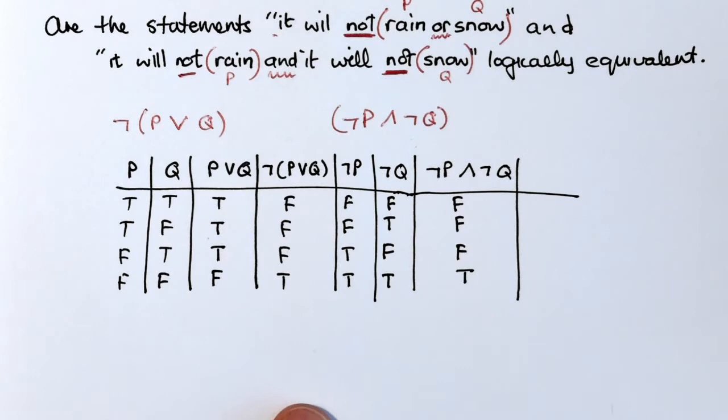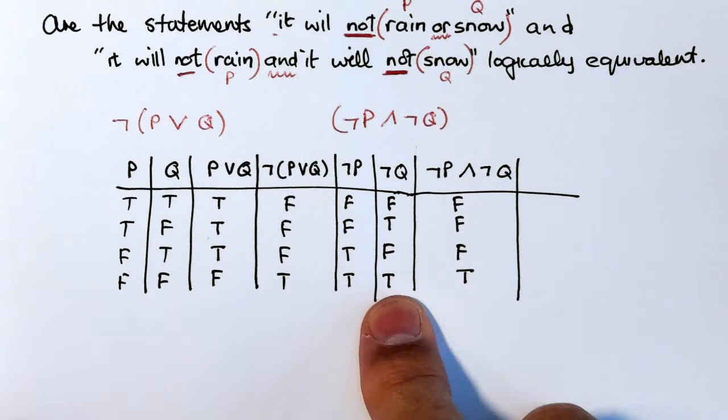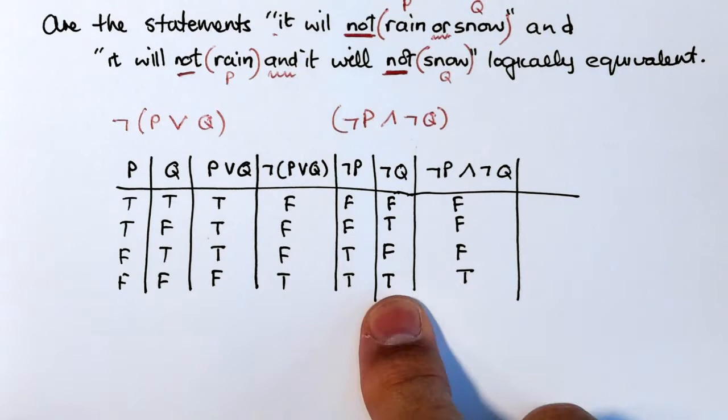So in every row, the truth tables for the two statements are equal. The two statements are logically equivalent then. Let's have a look. There they're both false, both false, both false. Huh, interesting. There they're both true. So these two statements are indeed logically equivalent because their status in each row is the same. We zoom in on those, they're the same, so the two of them are indeed logically equivalent.